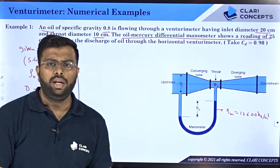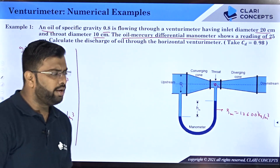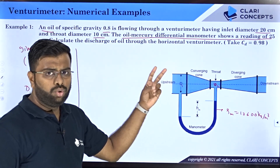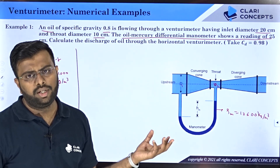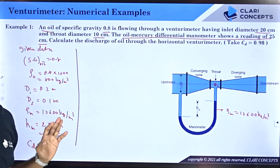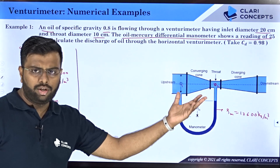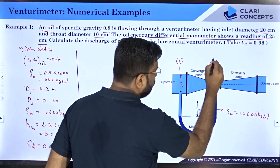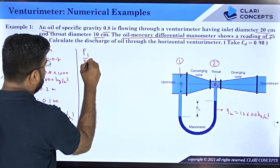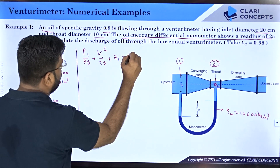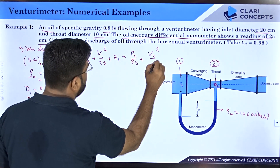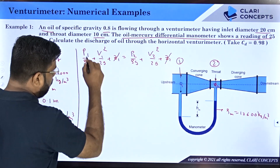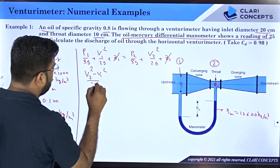Even without remembering the formula, we can derive it using Bernoulli's equation at both sections. Applying Bernoulli's: p1/ρg + v1²/2g + z1 = p2/ρg + v2²/2g + z2. Since the venturimeter is horizontal, z1 = z2 and they cancel. Rearranging: v2² − v1² = 2(p1 − p2)/ρ, where ρ is the density of oil. This is equation number one.